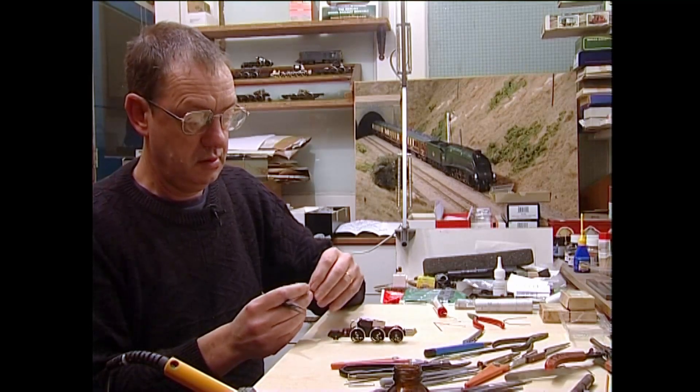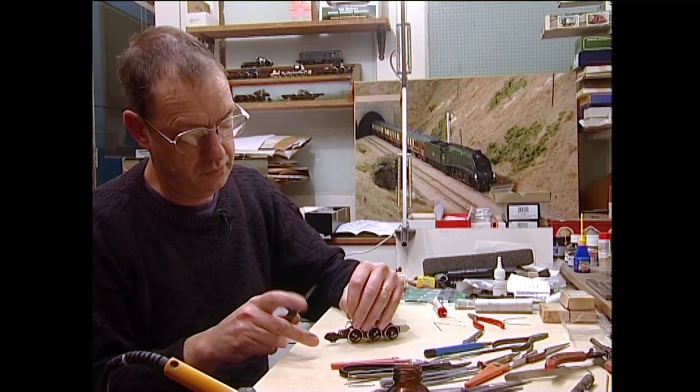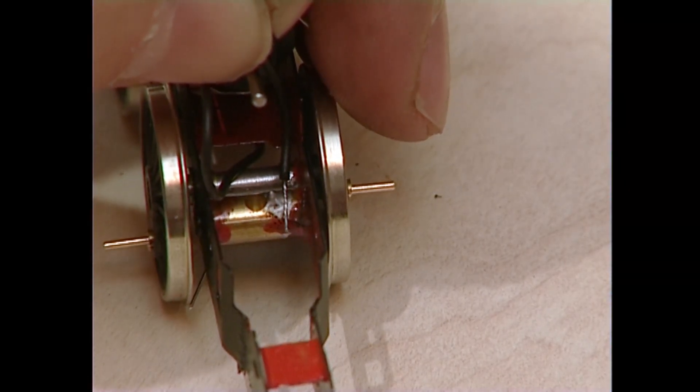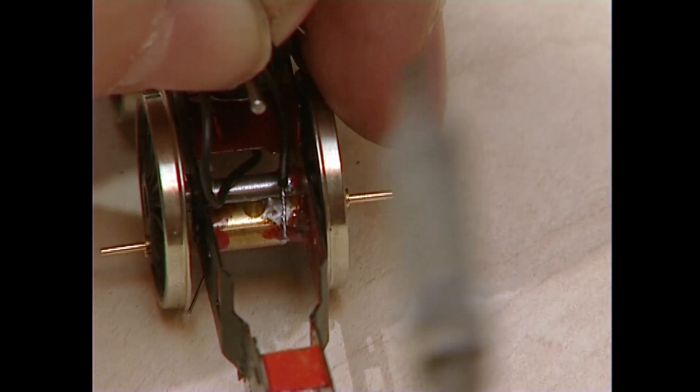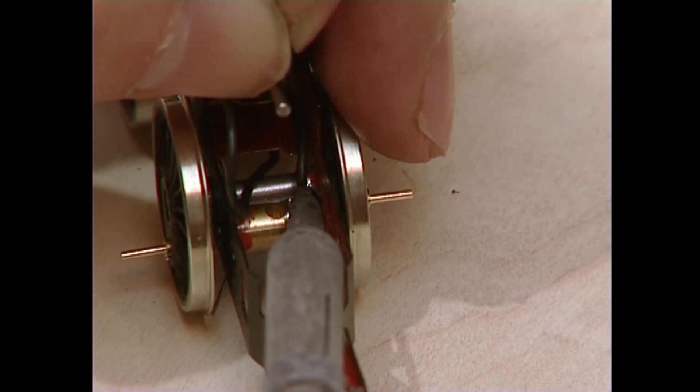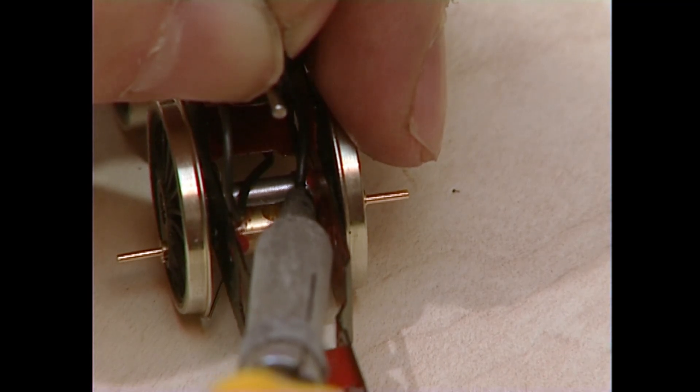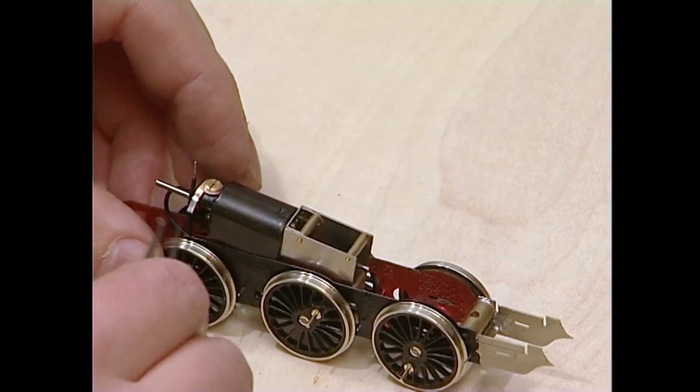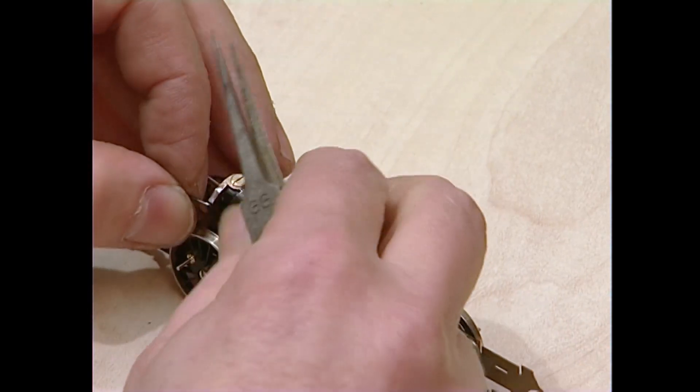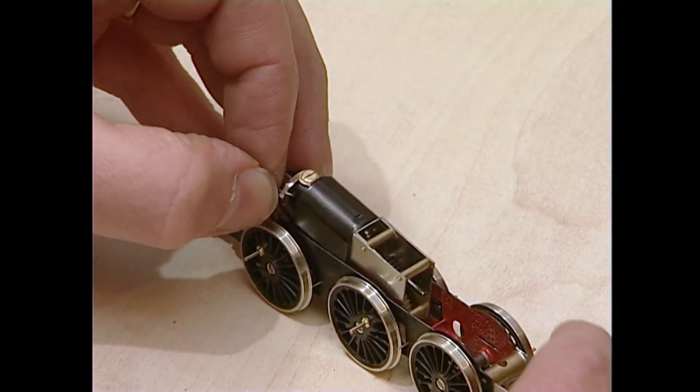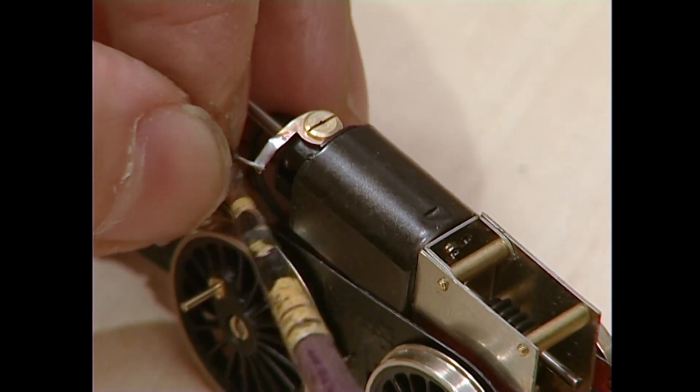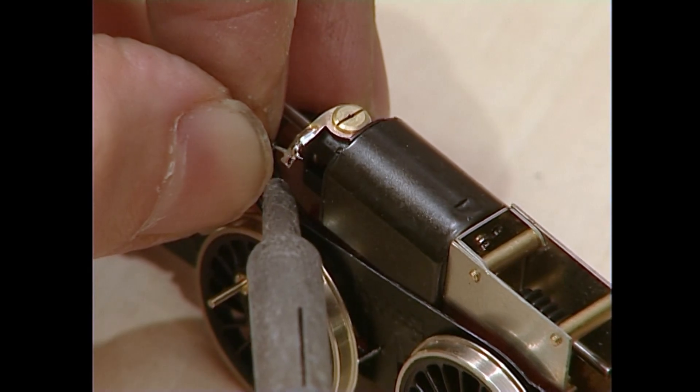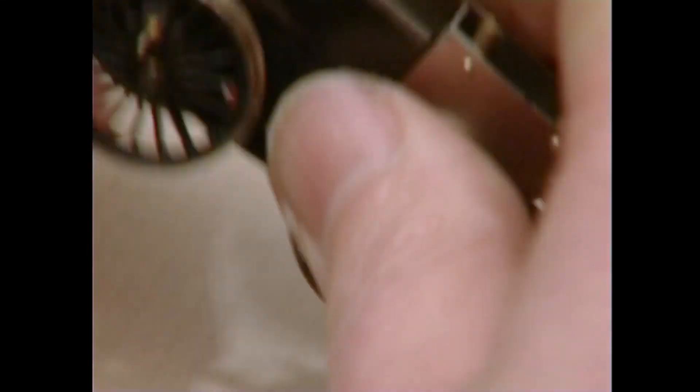So we turn it onto the motor tag, already tinned, but even then I add just a little touch of flux. If in doubt, add flux. That way you end up with a really good joint. Just give it a little tug. Now that's given a path from the insulated side of the chassis to the motor. We now have to get from the uninsulated side to the other motor brush.